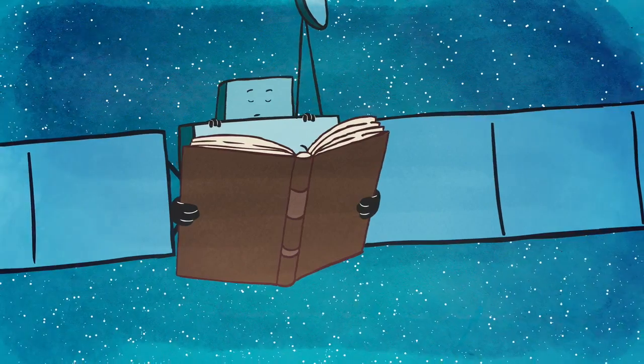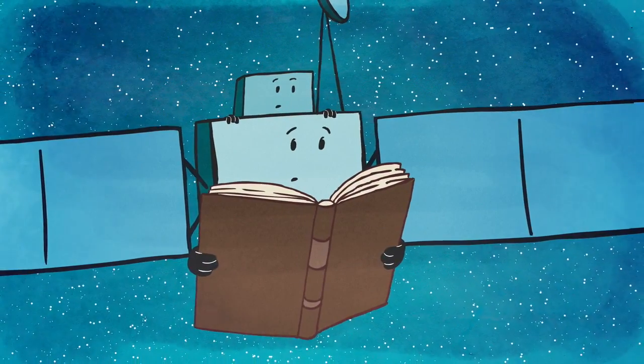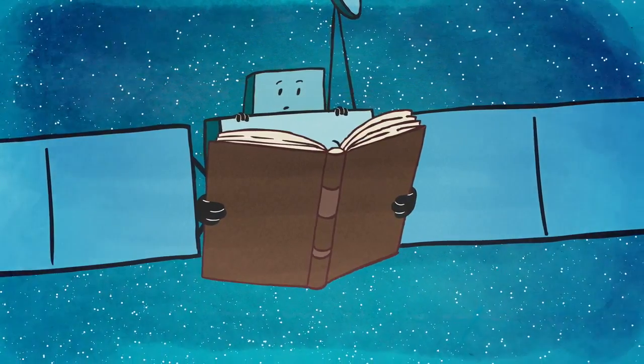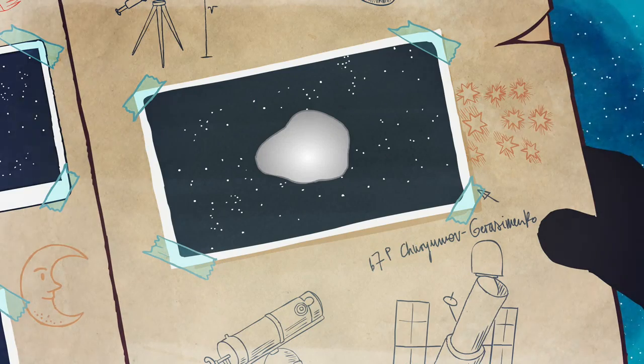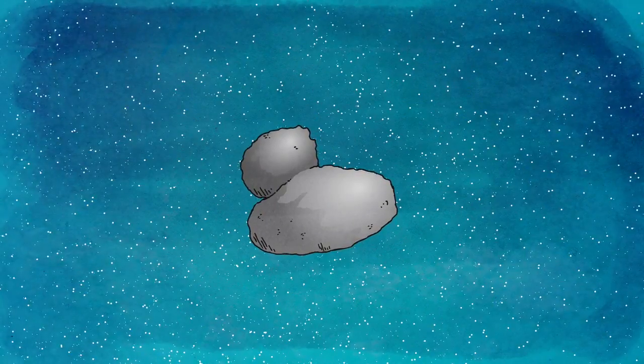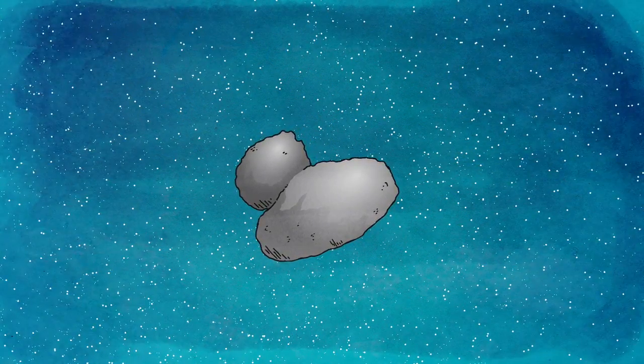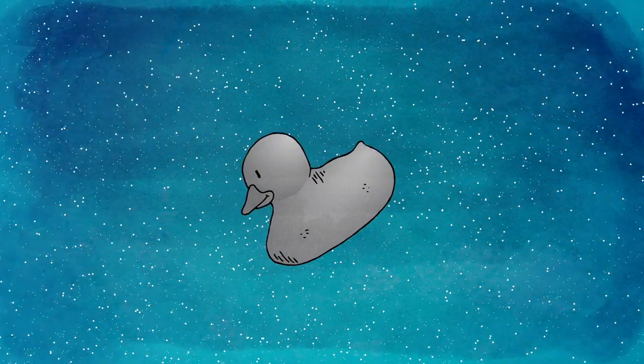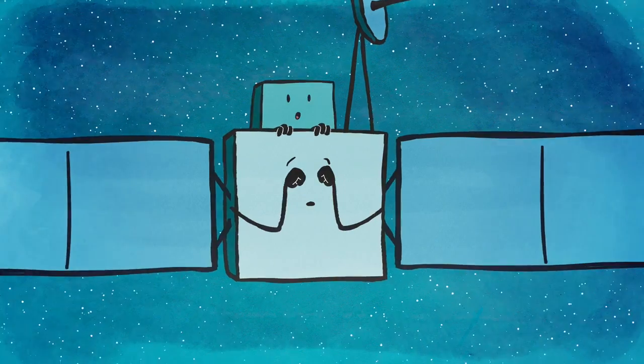But as she got closer, Rosetta realized that the comet was much more complex than people had thought using telescopes from far away. It almost looked like two comets stuck together and from some angles its shape was really rather strange.